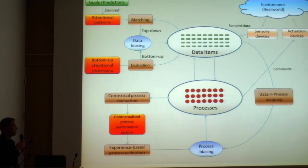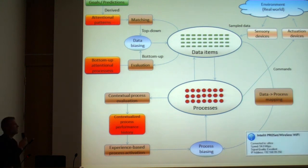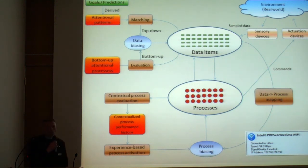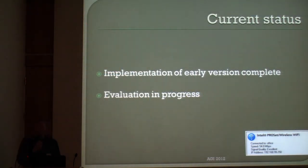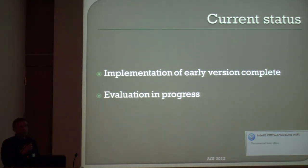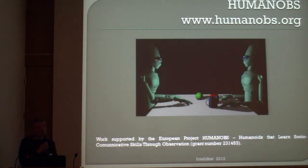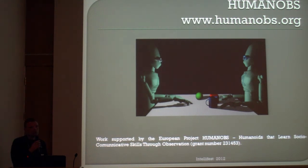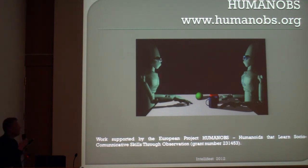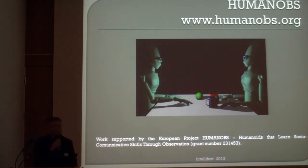Interestingly, although I set out to focus on attention, this kind of mechanism covers very large parts of the control mechanism for cognitive architecture. The current status: an early version implementation is complete and evaluation is in progress. This work was done as part of the HumanOS project, where a new cognitive architecture called ERA was created, going a long way towards establishing the feasibility and value of constructivist methods. It just passed final European Union review with flying colors, and there are new videos and interesting material on the website.